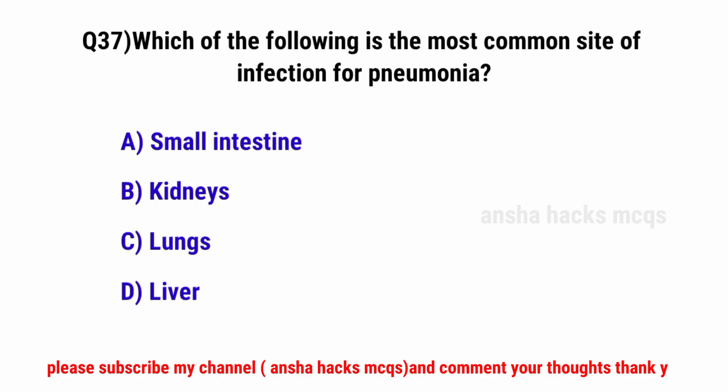Question No. 37. Which of the following is the most common site of infection for pneumonia? The correct option is C: Lungs.